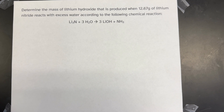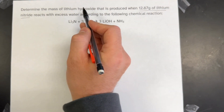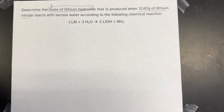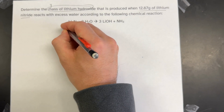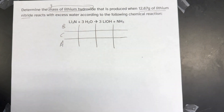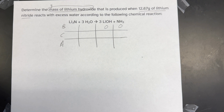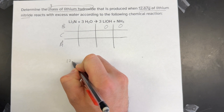In our last problem, we determine the mass of lithium hydroxide produced when 12.87 grams of lithium nitride reacts with excess water according to the following chemical reaction. This is a stoichiometry problem — they give me the balanced chemical reaction, and I'm starting with 12.87 grams of lithium nitride and asked for the mass, meaning grams, of lithium hydroxide. Lithium nitride and lithium hydroxide are two different substances. I'll draw my BCA table, giving every reactant and product a box, and I can't put 12.87 grams into the table — I have to first convert to moles.